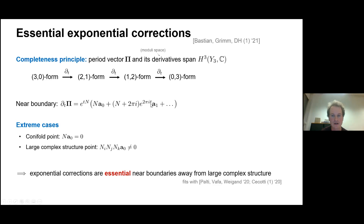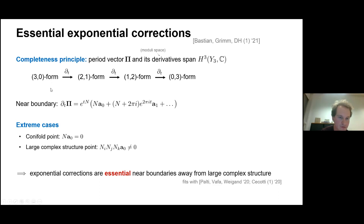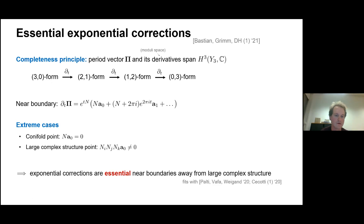At the conifold point, the monodromy matrix acts trivially on the leading term a_0, so log-N times a_0 equals zero. This means that to make sense of the derivative ∂Π, there needs to be a term a_1 in the expansion — an existence condition on exponential corrections. On the other end, at the large complex structure point you get a triple product of log-monodromy matrices, and you know some combination should be nonvanishing, consistent with ignoring worldsheet corrections sufficiently far out.